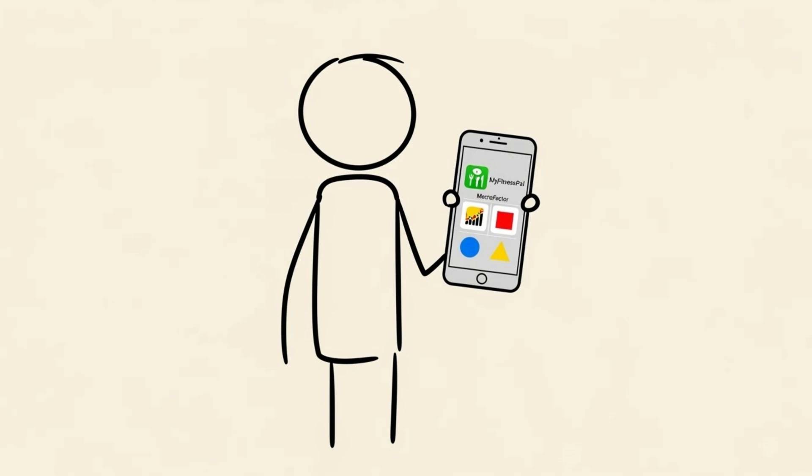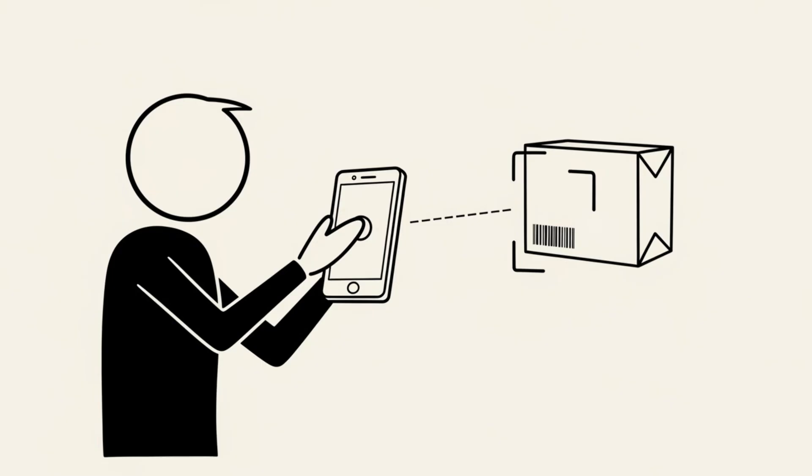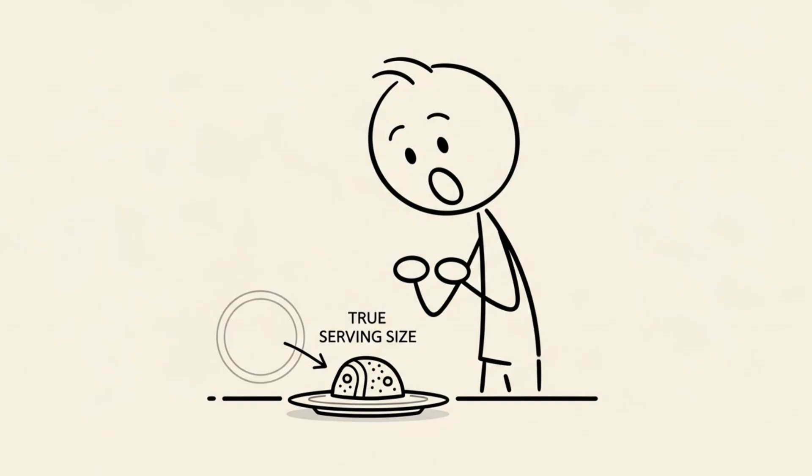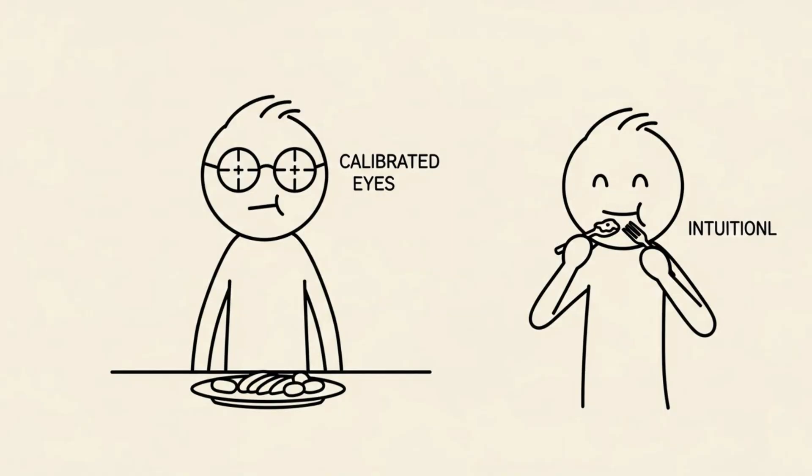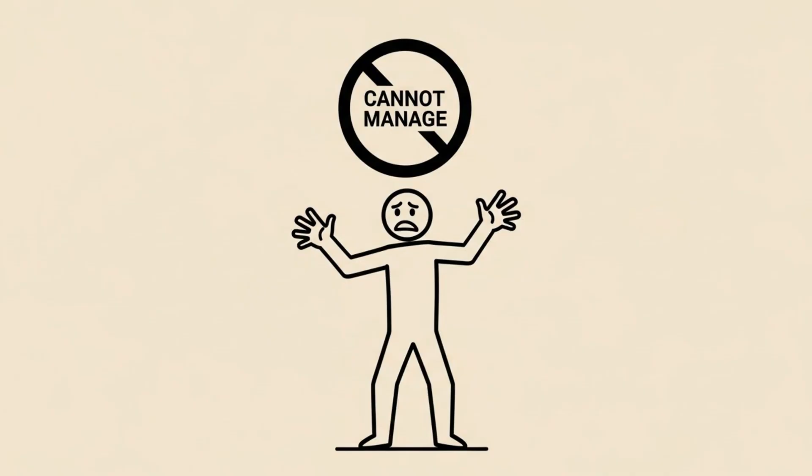Use an app like MyFitnessPal or MacroFactor. Scan the barcodes. Learn what a true serving size looks like. Once you have calibrated your eyes, you can switch to intuitive eating. But you cannot manage what you do not measure.